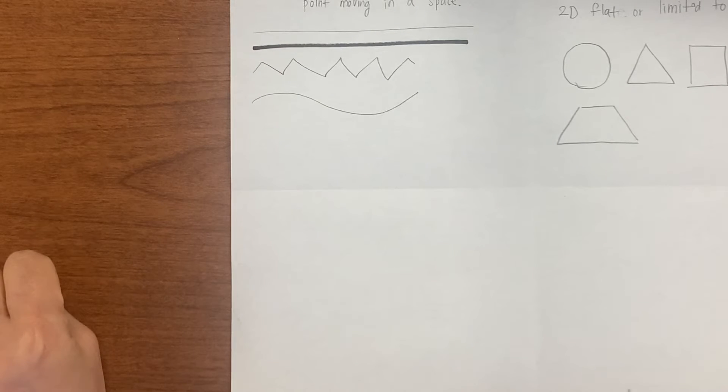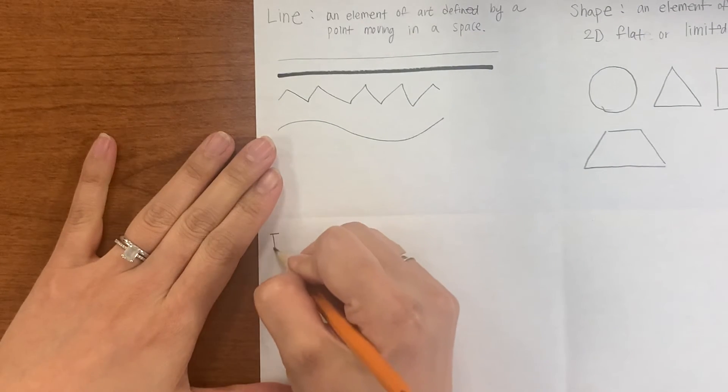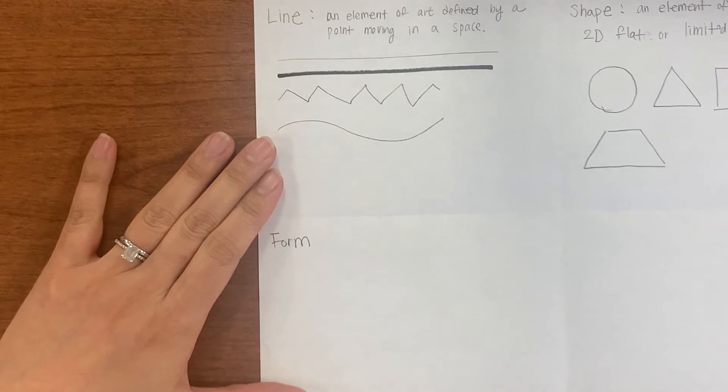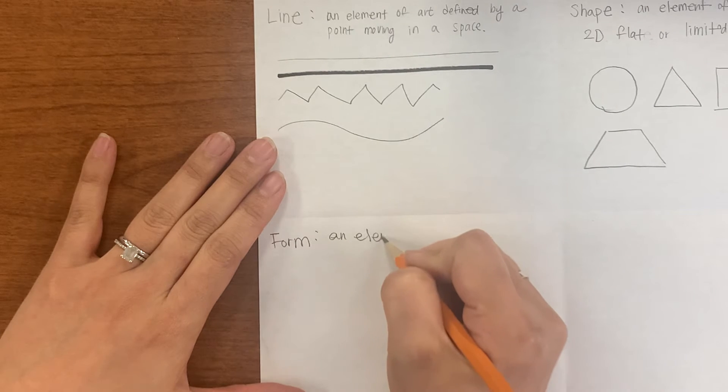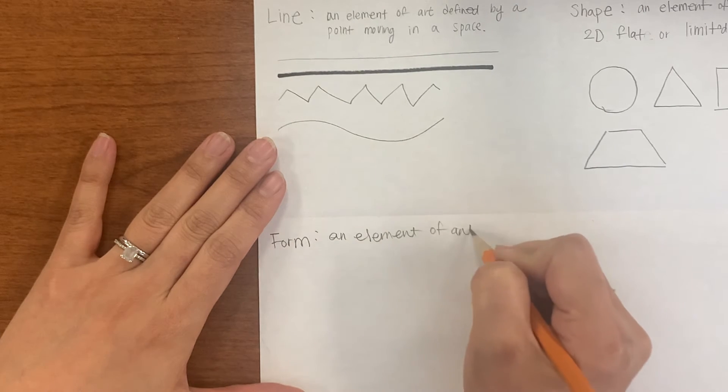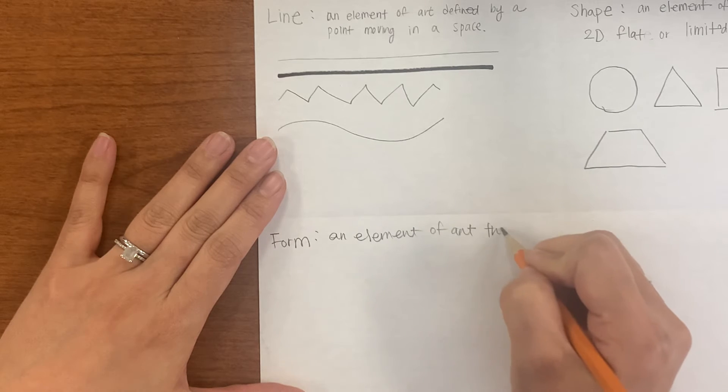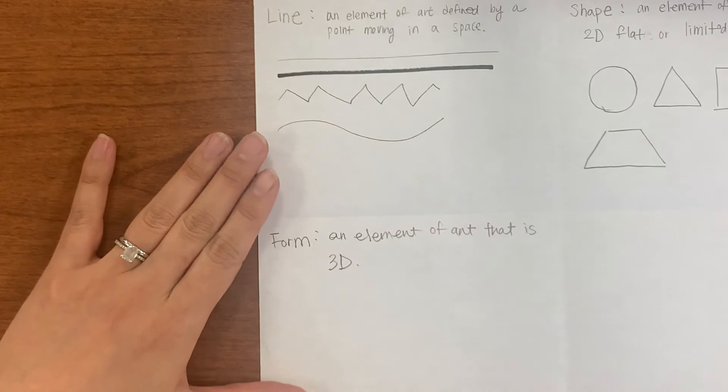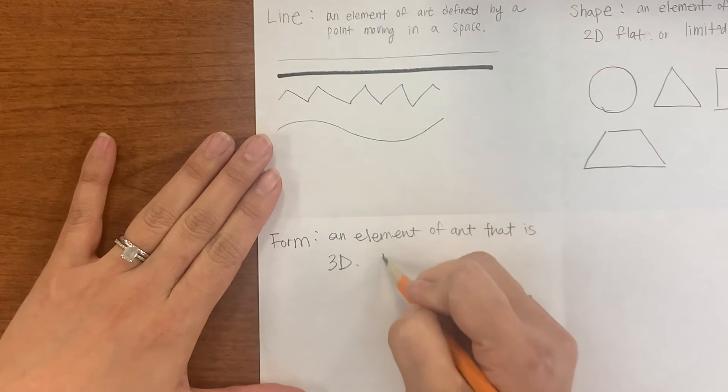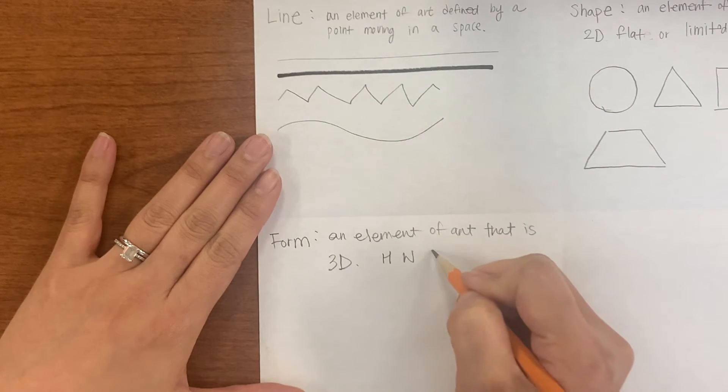All right. So let's go ahead and talk about your third element of art, which is a form. It's an element of art that is 3D. Simply put, it is 3D. It has height, width, and depth.